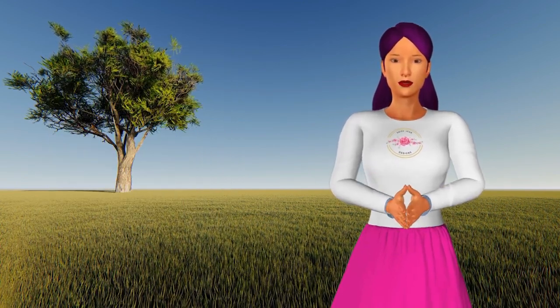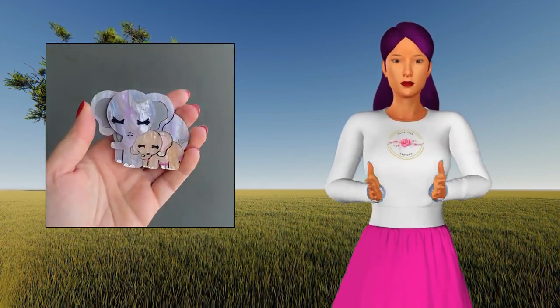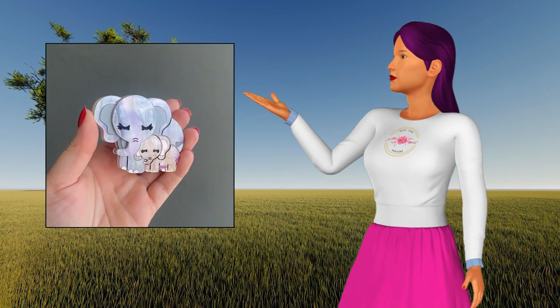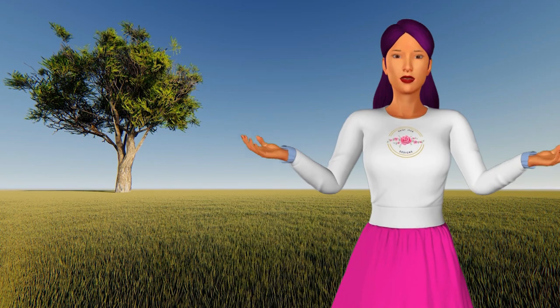Most people think there are only two different species of elephant when in fact there are three, two being in Africa. Did you know that elephant herds, just like meerkats, are led by a matriarch?